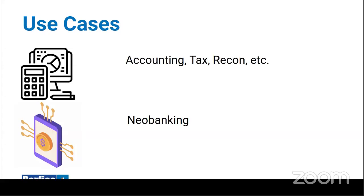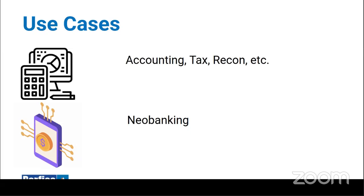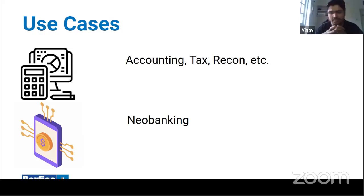On conflicting consent across multiple account aggregators: it's certainly possible. For example, HDFC wants to offer PFM giving customers a 360-degree view. I share two of my SBI accounts via Perfios AA, then share a third SBI account via a different account aggregator. HDFC gets data from both. From HDFC's perspective, it doesn't matter which AA it comes from — they always get the same data for a given account, making deduplication straightforward.